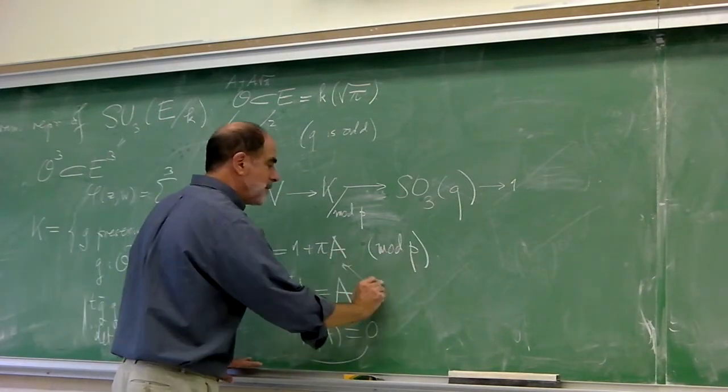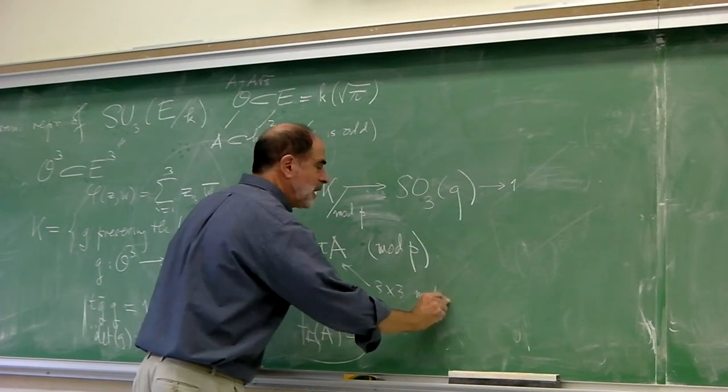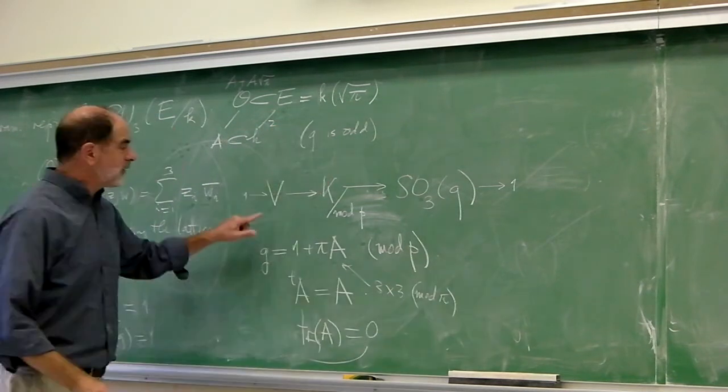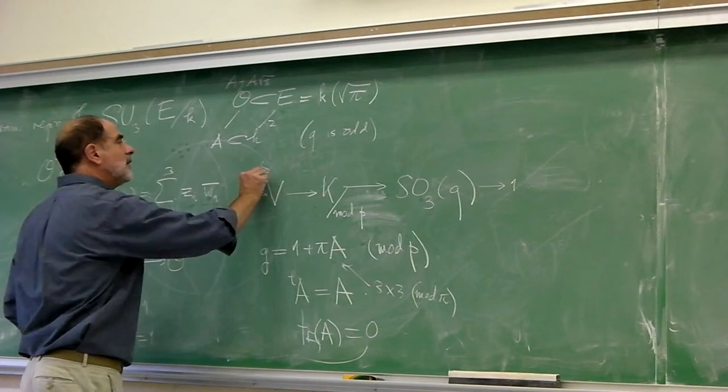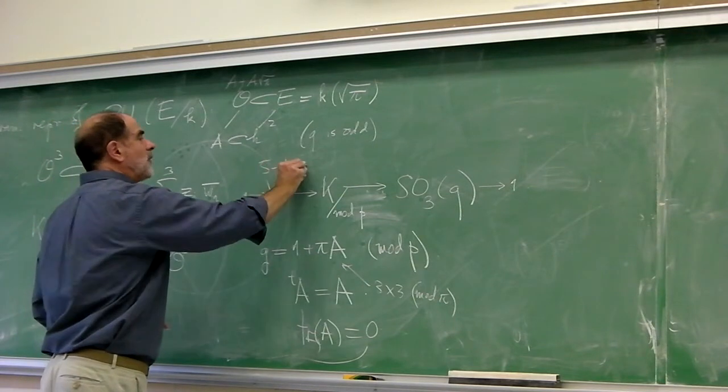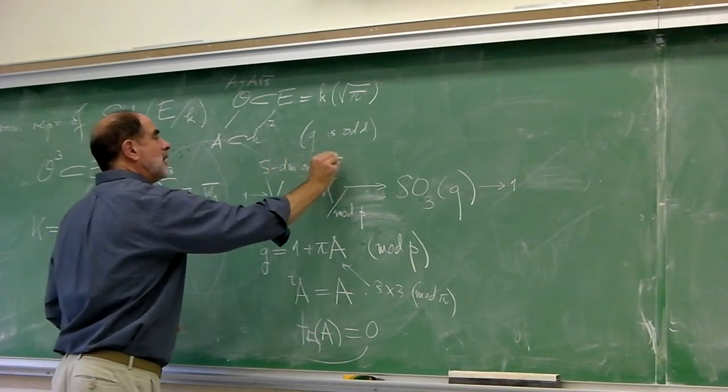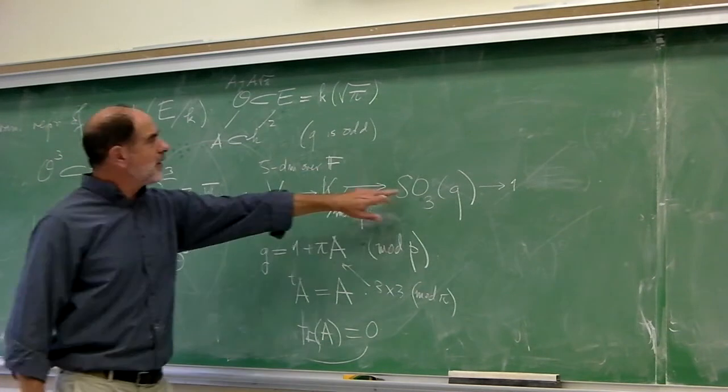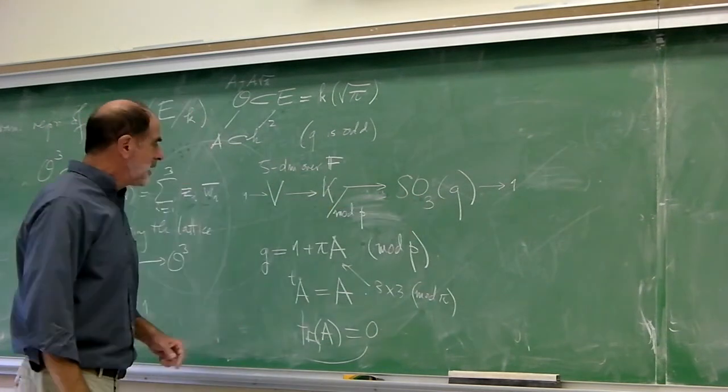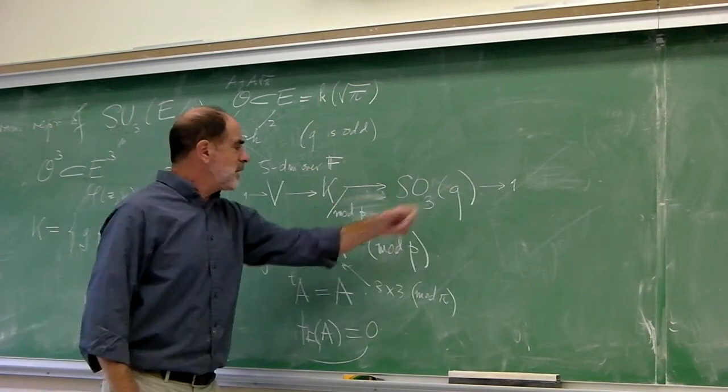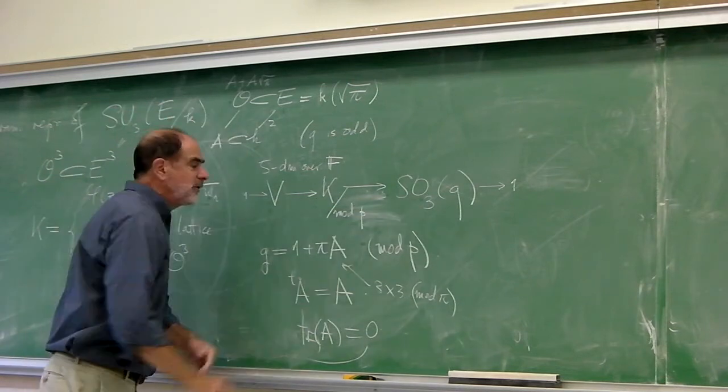This is a matrix 3 by 3 mod pi. In other words, this space turns out to be 5-dimensional over F. And the representation of the reduction mod pi on it is the action of SO3Q on the self-adjoint matrices of trace 0.